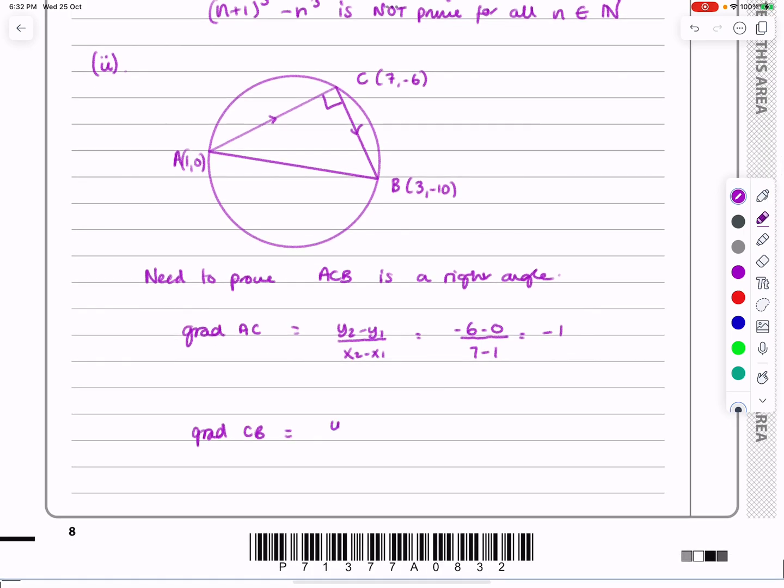If I do that with CB, I get (y₂ - y₁) over (x₂ - x₁). That's going to give me -10 plus 6, all over 3 minus 7. That gives me -4 over -4, which gives me 1 here.